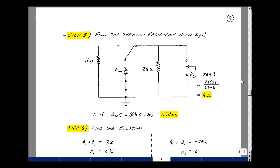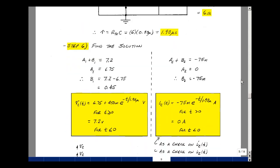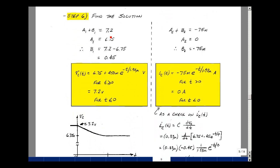And step six is to find the solution using the results that I found. We found that a1 plus b1 was 7.2, a1 was 6.75, so we can then solve for b1. It's going to be equal to 7.2 minus 6.75, and that's 0.45. V sub C of t is a1 plus b1 times e to the minus t over tau volts. Put this in engineering notation, 6.75 plus 450 milli times e to the minus t over 1.98 microseconds. So we have this true for t greater than, but also equal to zero. When t was less than zero, we found that the voltage across capacitor was 7.2. If we evaluate this equation when t is equal to zero, we get 6.75 plus 0.45, and that's 7.2. The capacitor voltage is continuous as we pass through zero.